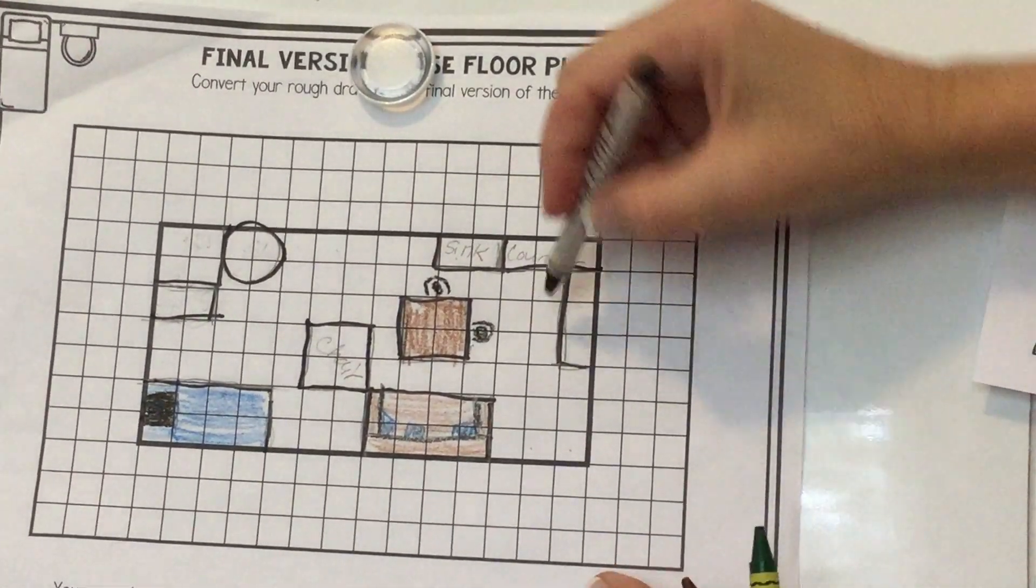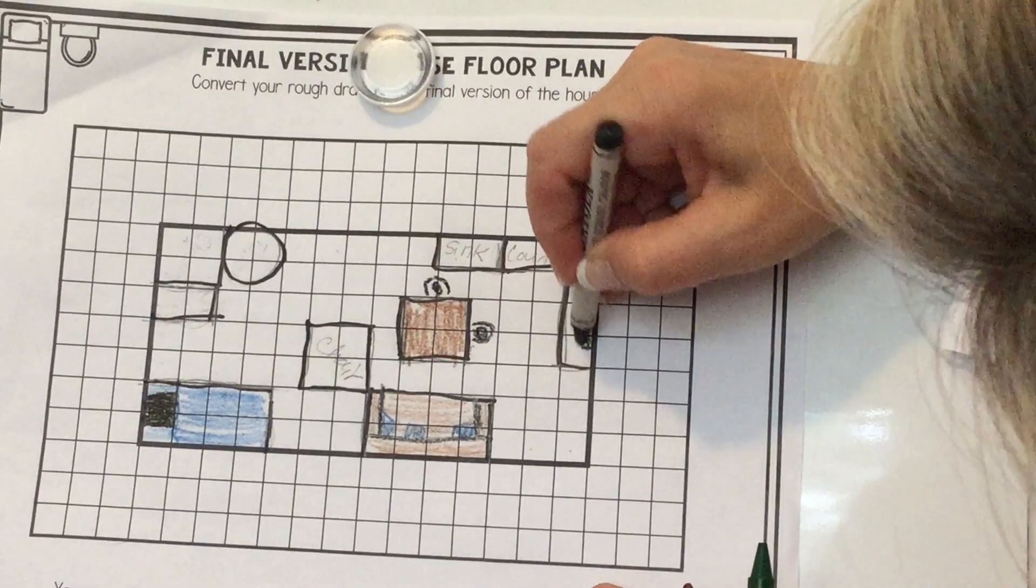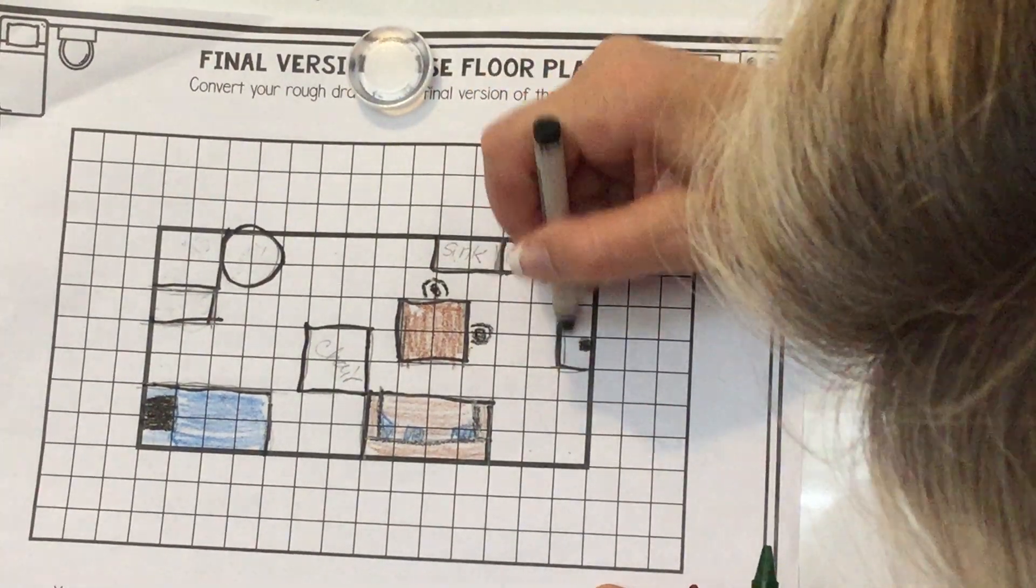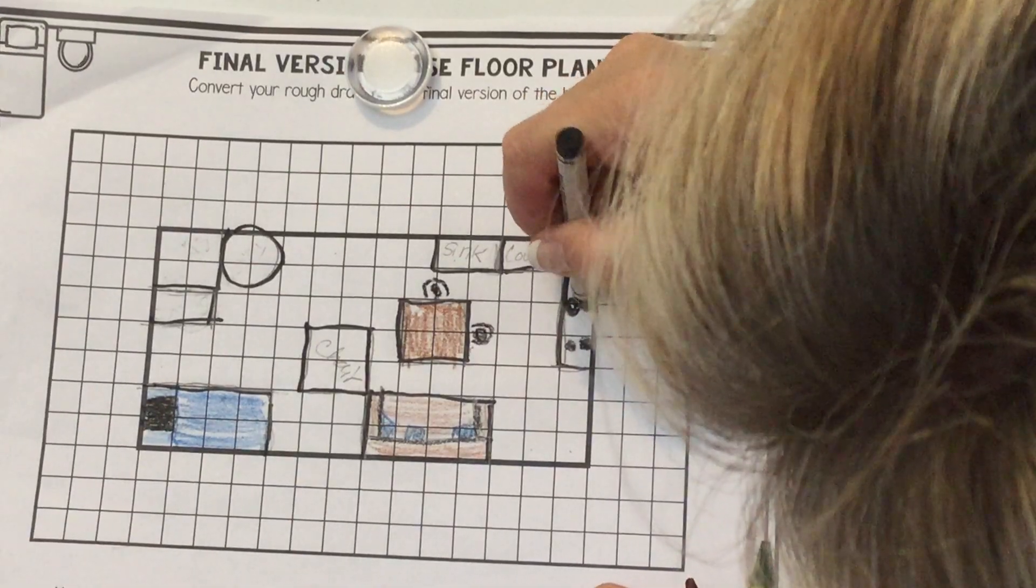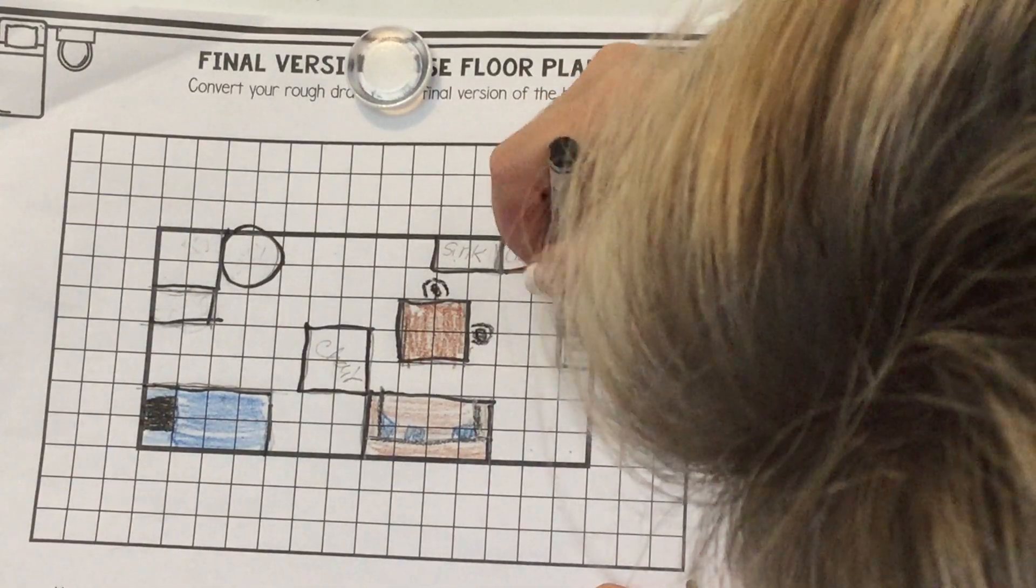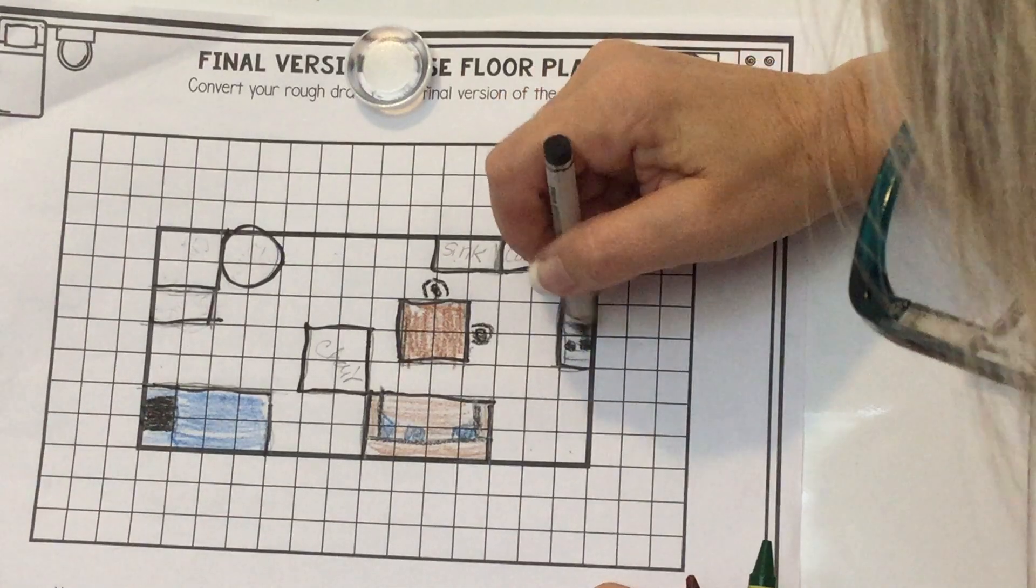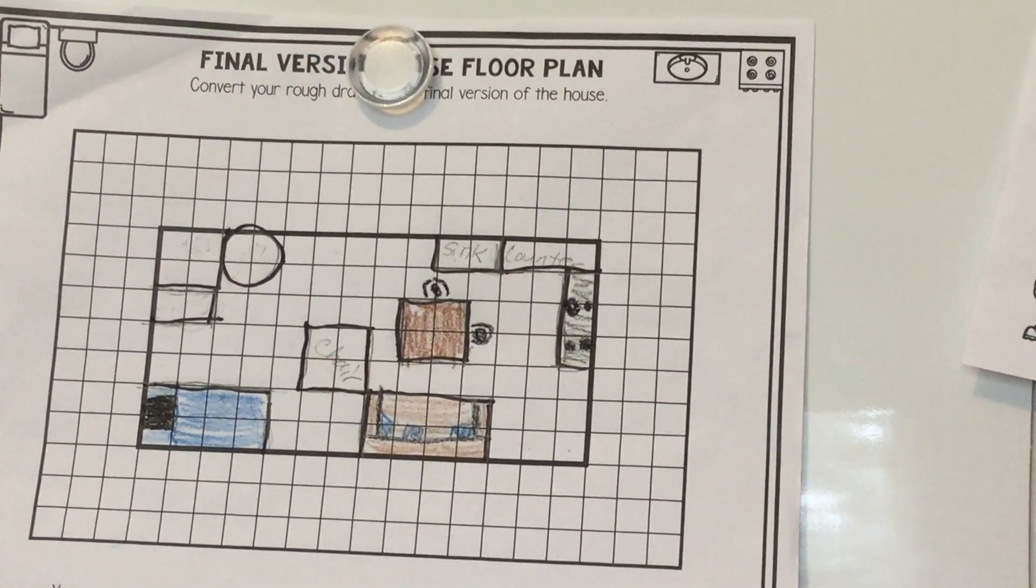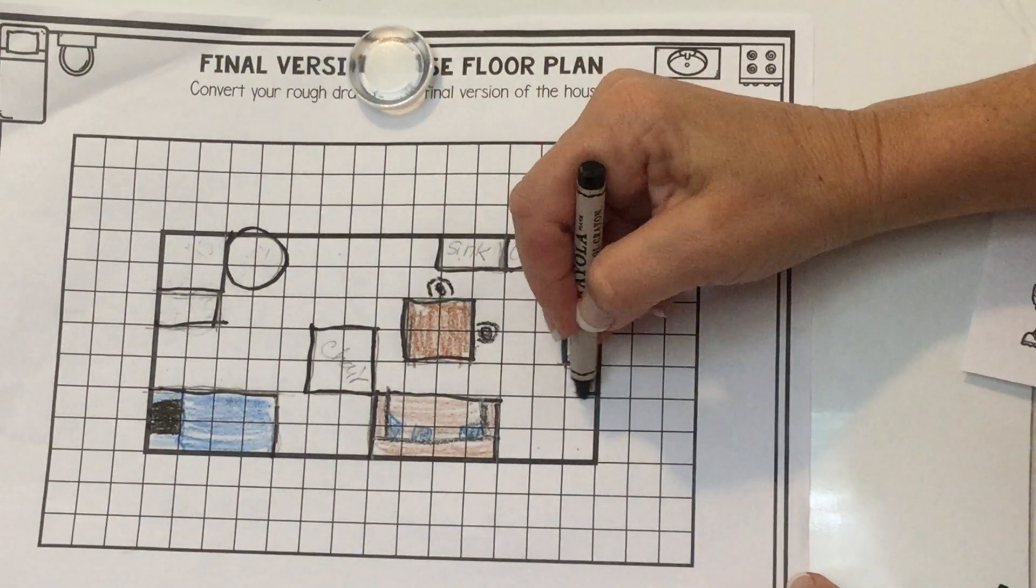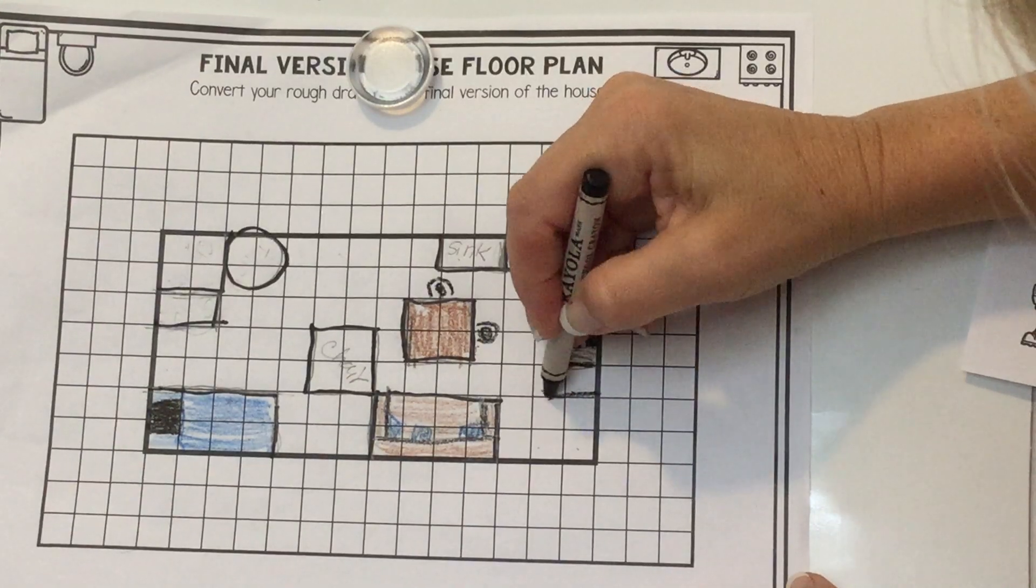Here's my oven stove. Big burners. Little burners. Color it very lightly. You know what I didn't put in is a refrigerator. I think I was supposed to put in a refrigerator, so I might put that right here.